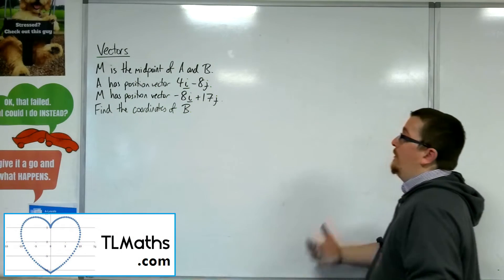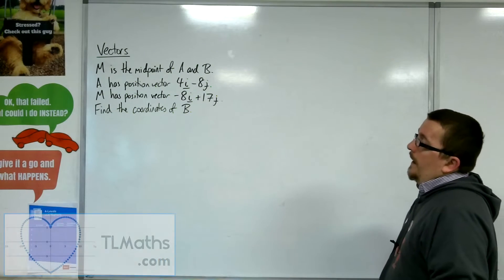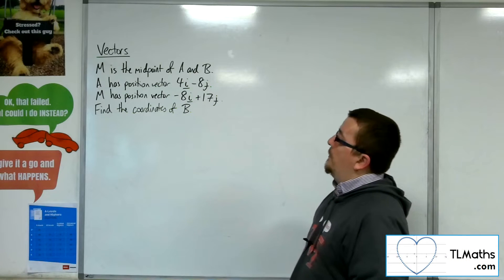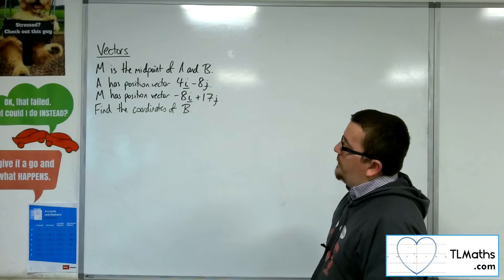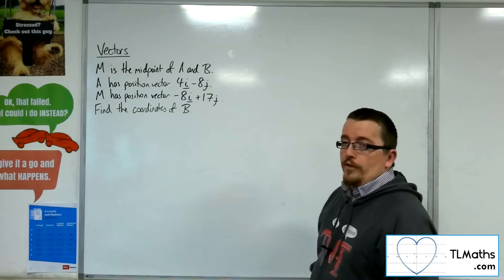OK, so let's say M is the midpoint of A and B. A has position vector 4i minus 8j, M has position vector minus 8i plus 17j. Find the coordinates of B.